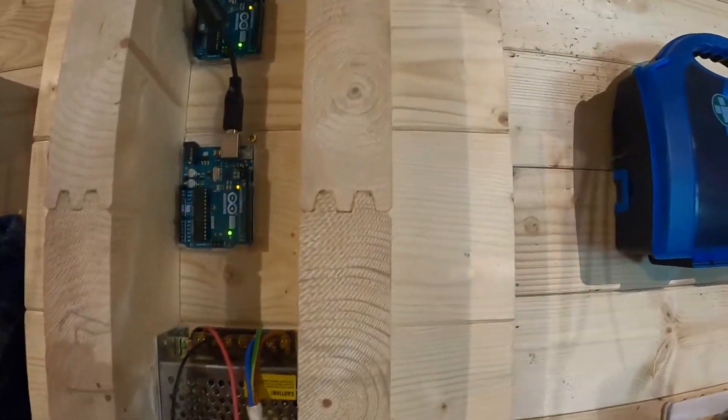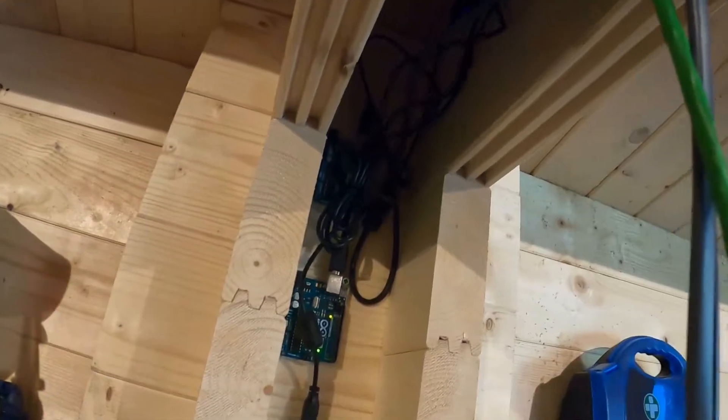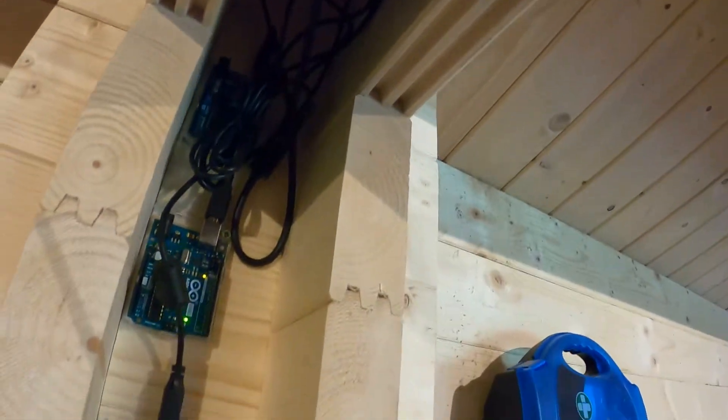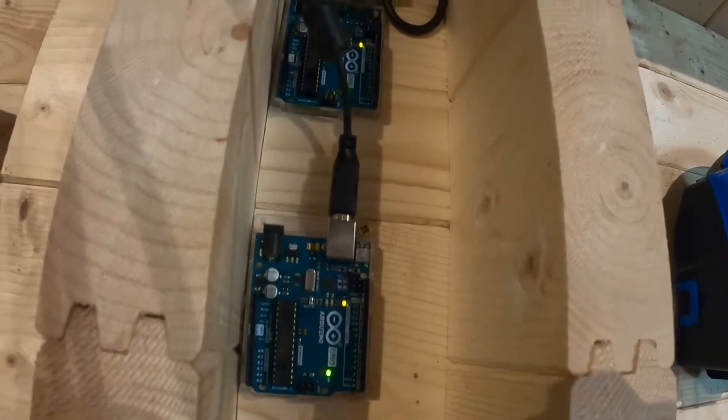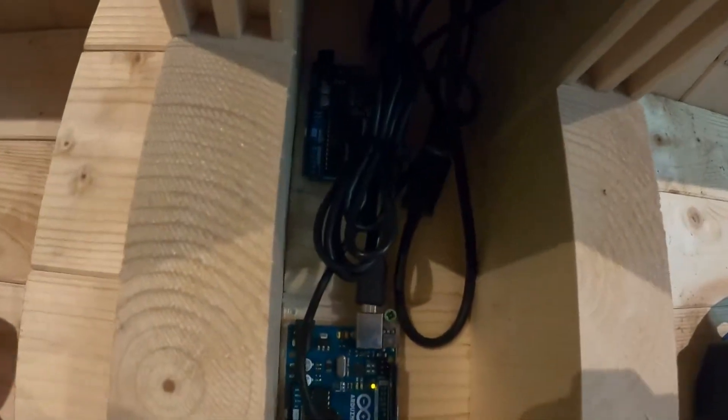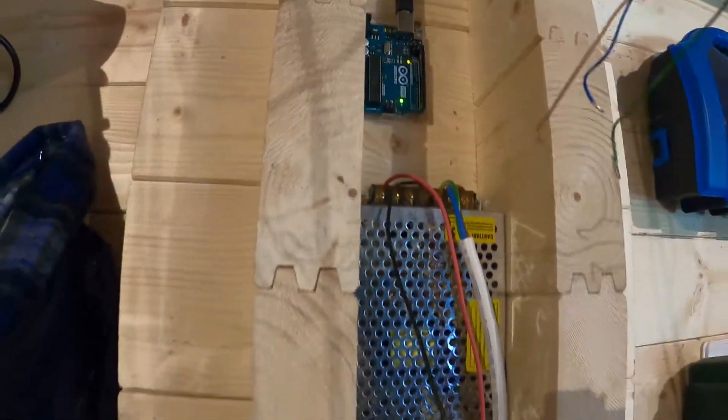Then above it we've got our three Arduinos and the Arduinos are connected to a USB hub up there so that one USB cable is going back to Jarvis and then each one of these Arduinos is running one light strip so we can have individual addressable LEDs.